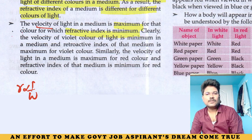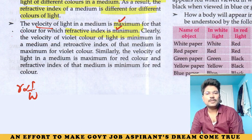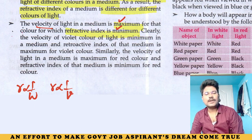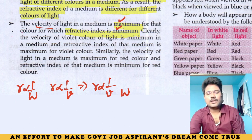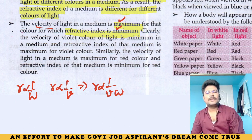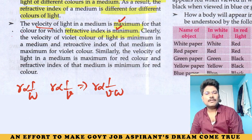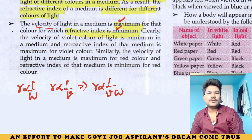The velocity of light is maximum when refractive index is minimum. R is inversely proportional to V — velocity. We can conclude that R is inversely proportional to V and W — where W is the wavelength, V is velocity, and R is refractive index.